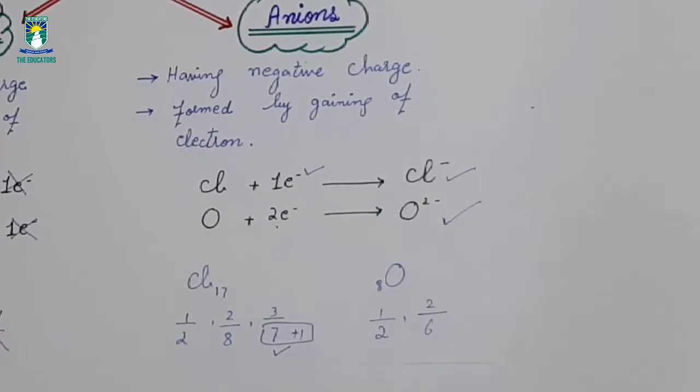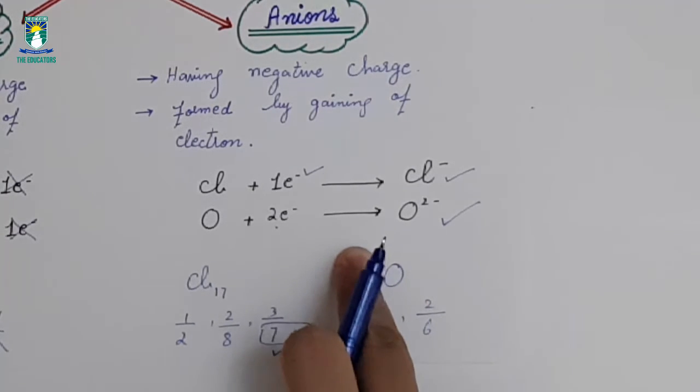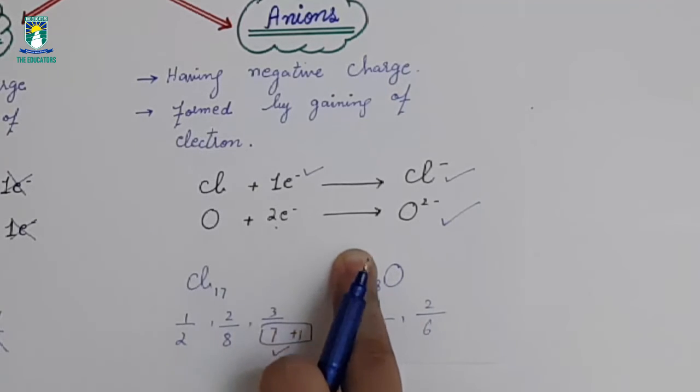And becomes stable. Elements that have this ability to gain will be able to gain electrons in the same number.